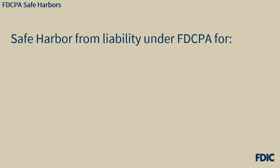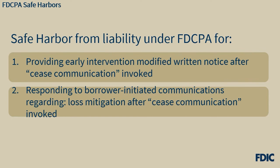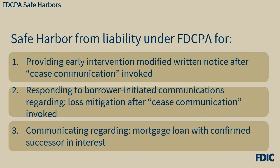The rules require servicers to provide certain servicing disclosures even after a borrower has invoked the cease communication protection under the FDCPA, including periodic statements as mentioned earlier, as well as various other notice requirements as described in the rules. In 2016, the CFPB issued an interpretive rule providing safe harbors from liability under the FDCPA in the following three situations: 1. Providing an early intervention modified written notice to a borrower who has invoked the cease communication protection under the FDCPA. 2. Responding to borrower-initiated communications concerning loss mitigation after the borrower has invoked the cease communication protection under the FDCPA. 3. Communicating about a mortgage loan with a confirmed successor in interest in compliance with specified mortgage servicing rules in Regulation X or Z.